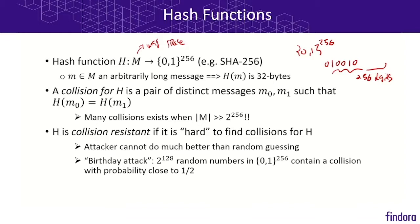The attacker cannot do much better than randomly guessing. The best known attack on collision-resistant hash functions is the birthday attack: if we randomly select 2^128 numbers in the range 0 to 2^256, then at least one pair will contain a collision with probability close to one-half. However, 2^128 is an insanely large number, and it should be infeasible for any adversary to actually produce those random trials in order to find such a collision.